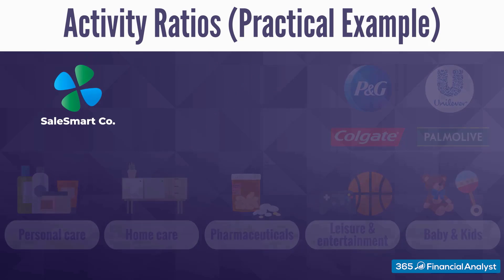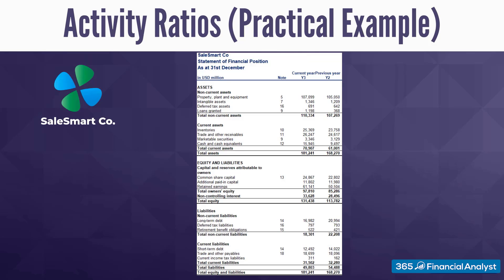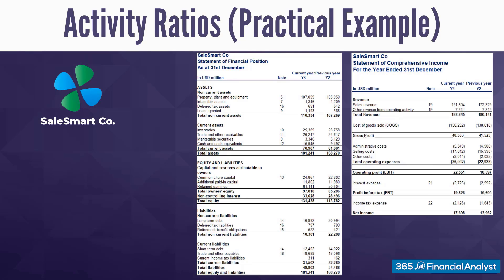These are the firm's statement of financial position and statement of comprehensive income for two consecutive years. Equipped with that information, we are now ready to calculate the company's activity ratios.